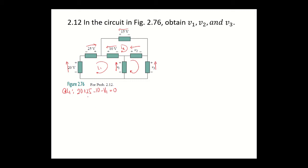Now, let us simplify. 20 plus 25 minus 10 gives you 35. Transposing your V1 to your right-hand side, we can say that your V1 is equal to 35 volts.